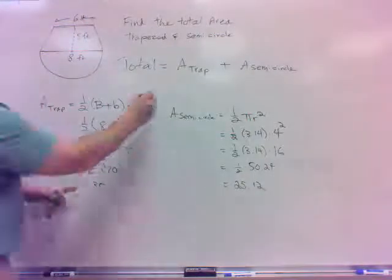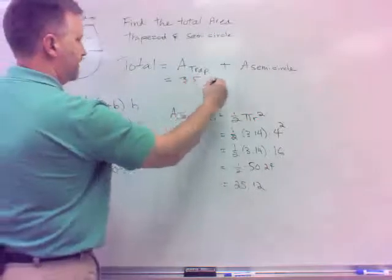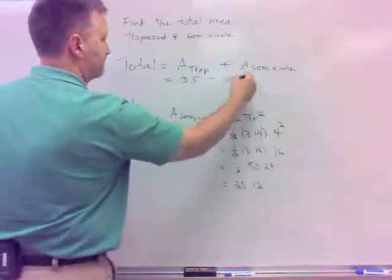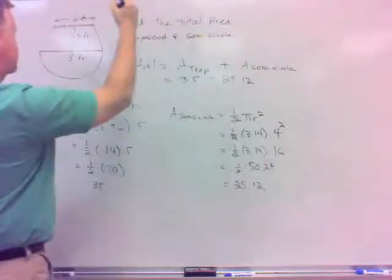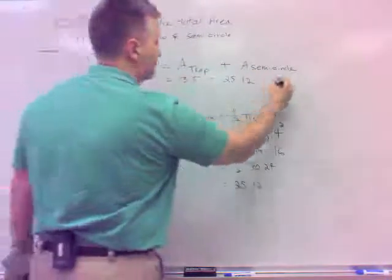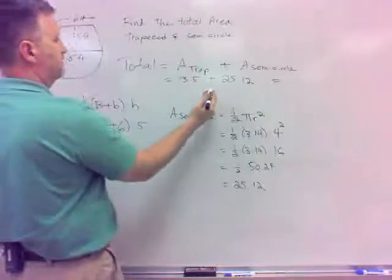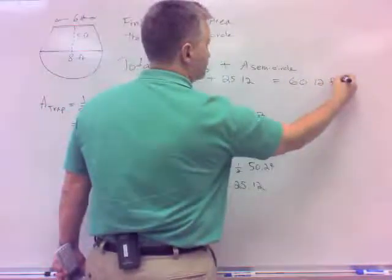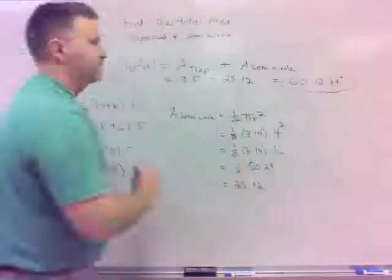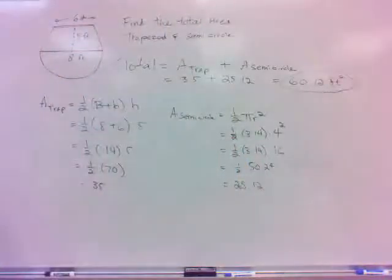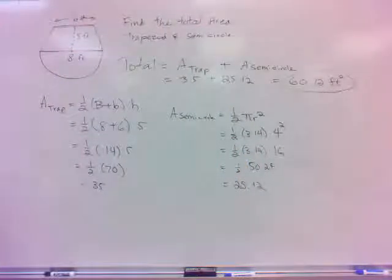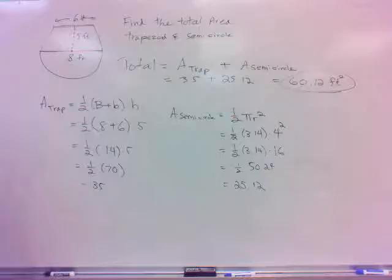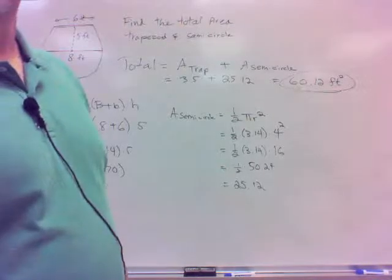So my total area would be 35 plus 25.12, which is 60.12 feet squared, square units, always for area. Did I do that right? I was going through pretty quick. Is this okay? All right.